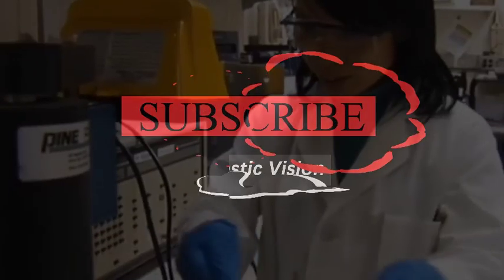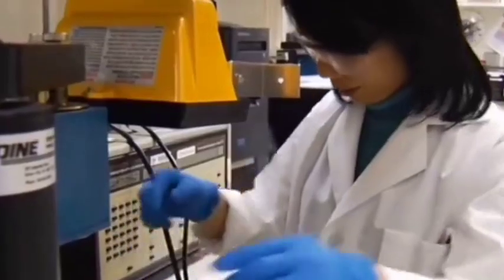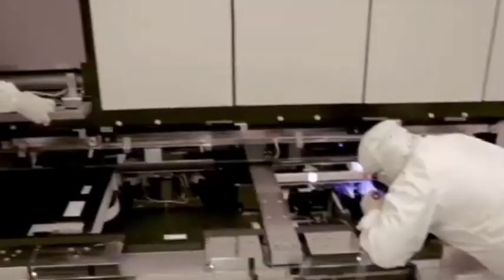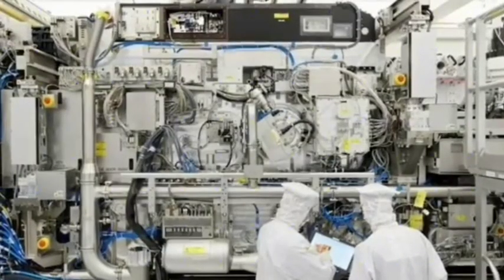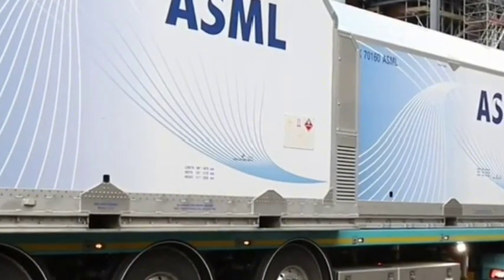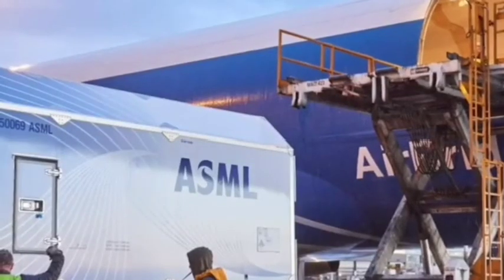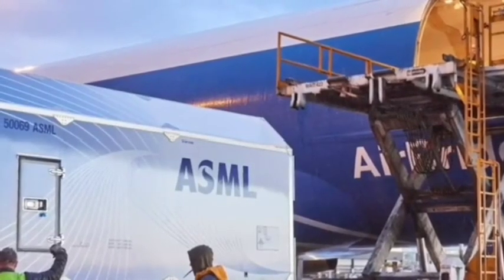If you always watch our video, you may know the global lithography machine giant ASML. Recently, three pieces of news came out which directly caused ASML in the Netherlands to be astonished. The spearheads of these three messages point to the core technology of ASML, EUV lithography technology, and they have the momentum to replace it. Unexpectedly, the retribution of ASML's cut-off supply came so quickly. Is EUV lithography technology really going to be cool?